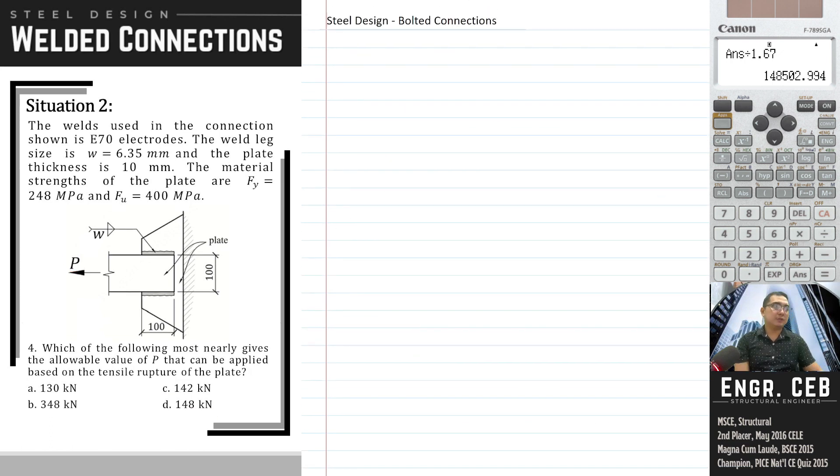Next, which of the following most nearly gives the value of P that can be applied based on the tensile rupture of the plate? For tensile rupture, the formula is P sub n equals fu times Ae. Ae is U times An, and for welds, An equals Ag, so that is U times Ag. We need to compute U.